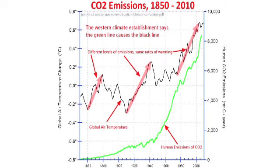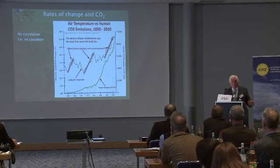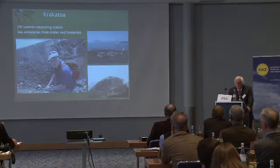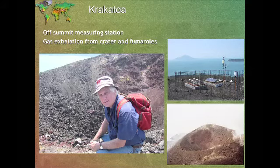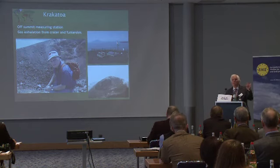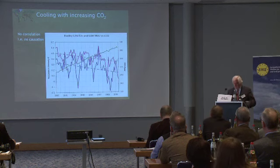Temperature rises are then followed by a carbon dioxide rise. We can see in modern times that temperature rises have all been at the same rate regardless of what carbon dioxide is doing — hence there's no correlation in modern times between carbon dioxide and temperature. We can see that carbon dioxide is going up and temperature is going down. Without correlation there is no causation.